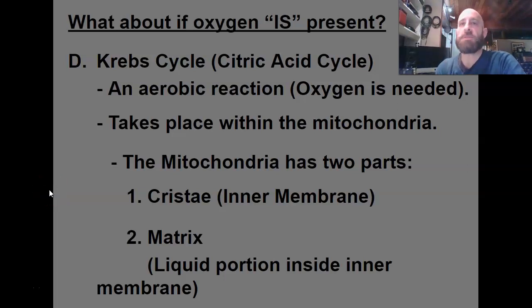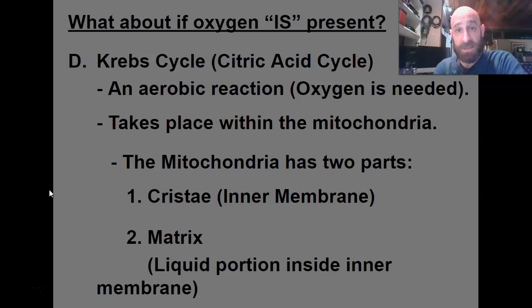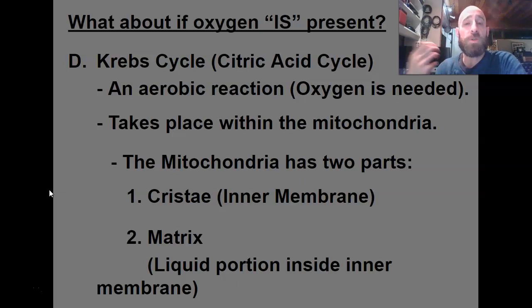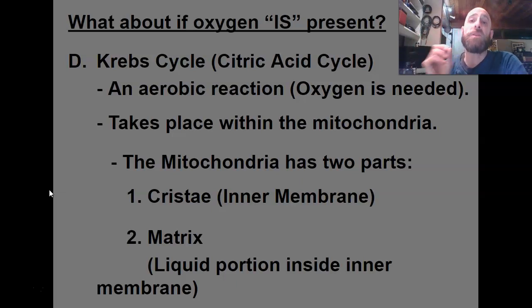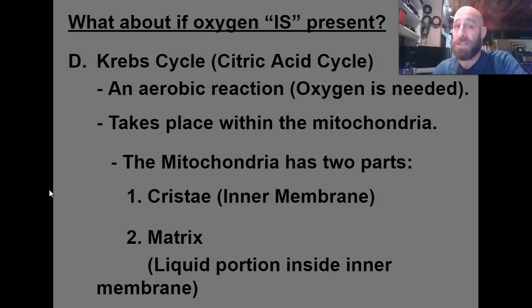We're going to finish up this short unit on cellular respiration with the last couple things that happen during the process. Up to this point, we've talked about two things. We've talked about glycolysis, which is extremely important because glucose is a six-carbon molecule that's too big to be used directly in the cell. So it's first broken down into two three-carbon molecules called pyruvate, and that step happens without oxygen.